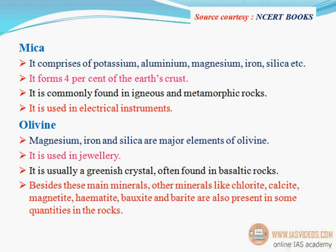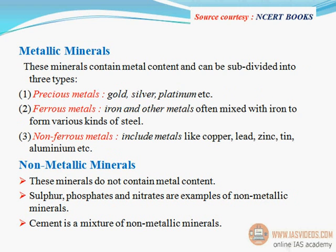Mica comprises potassium, aluminum, magnesium, iron, silica, etc. It forms 4% of the earth's crust, is commonly found in igneous and metamorphic rocks, and is used in electrical instruments. Olivine — magnesium, iron, and silica are major elements of olivine. It is used in jewelry and is usually a greenish crystal often found in basaltic rocks.